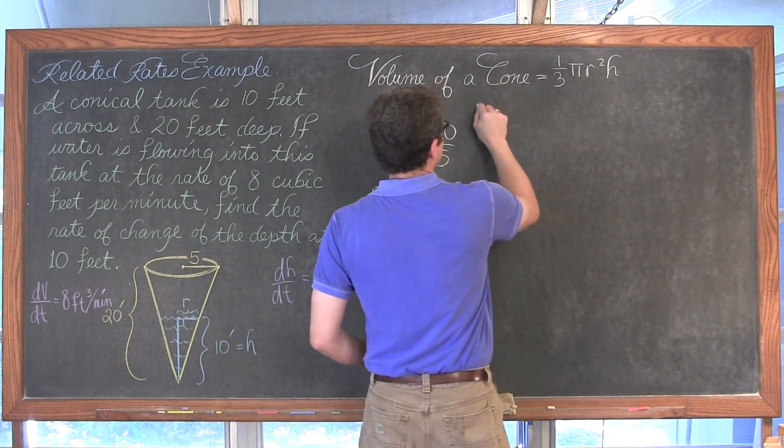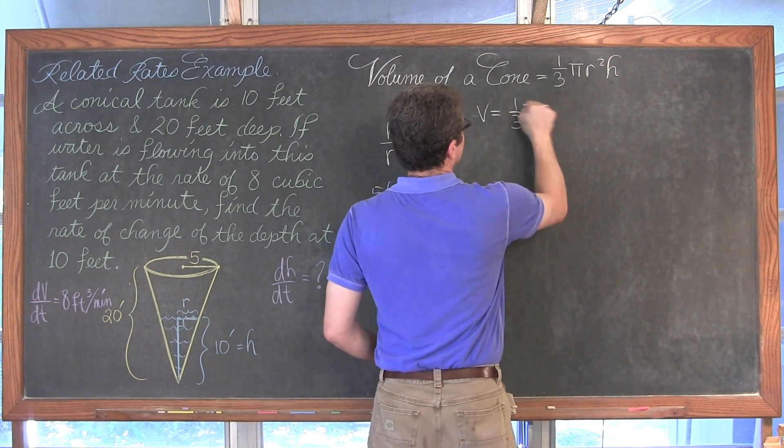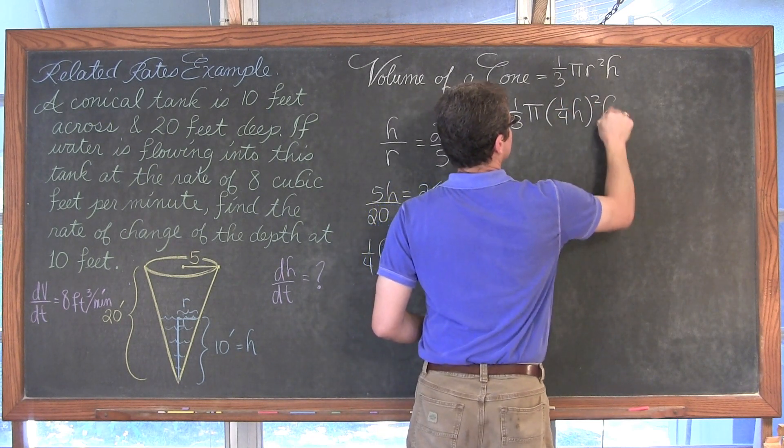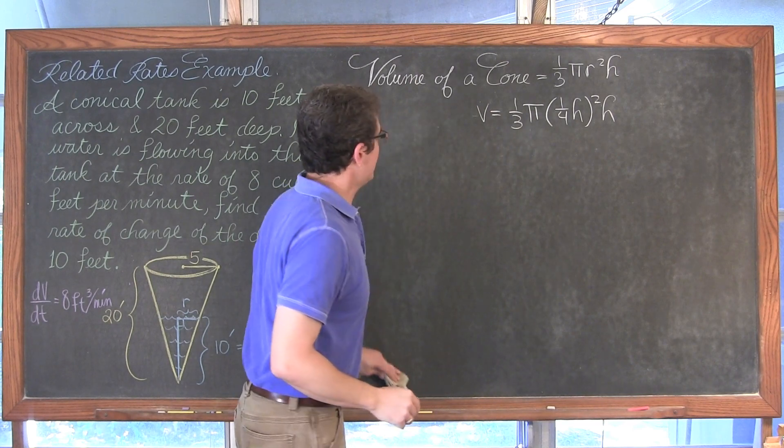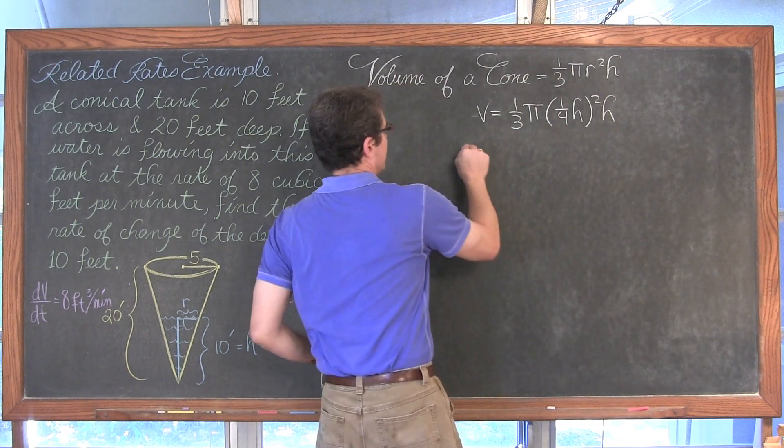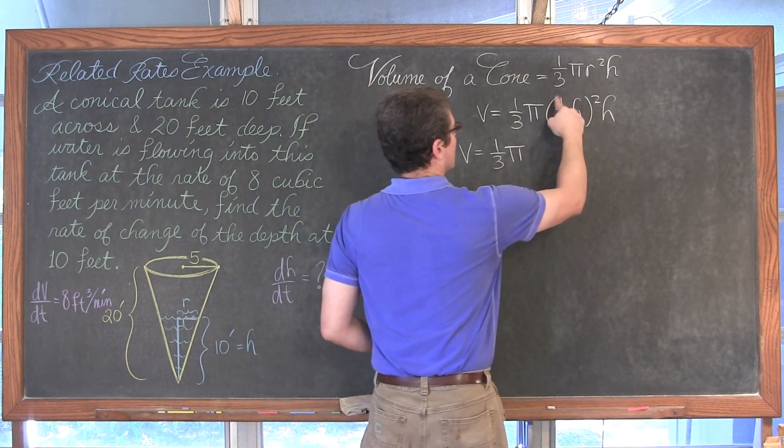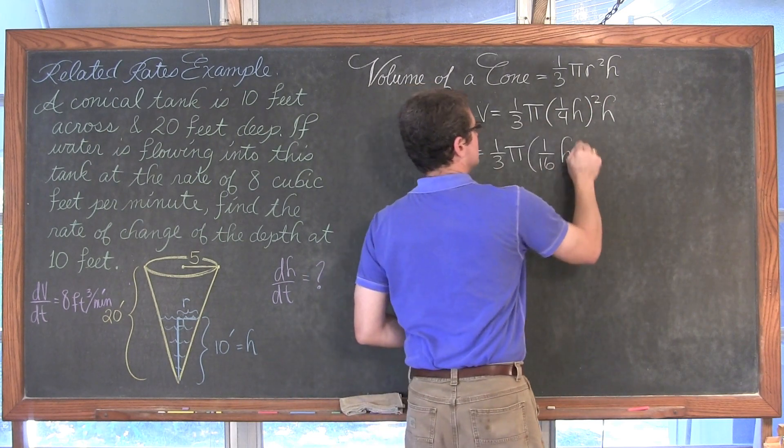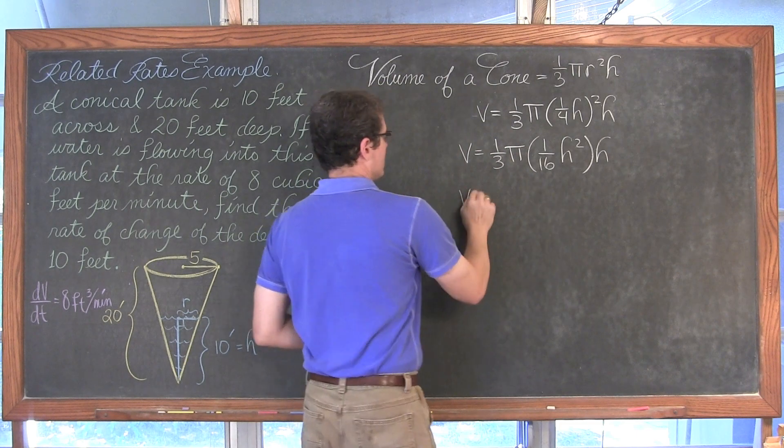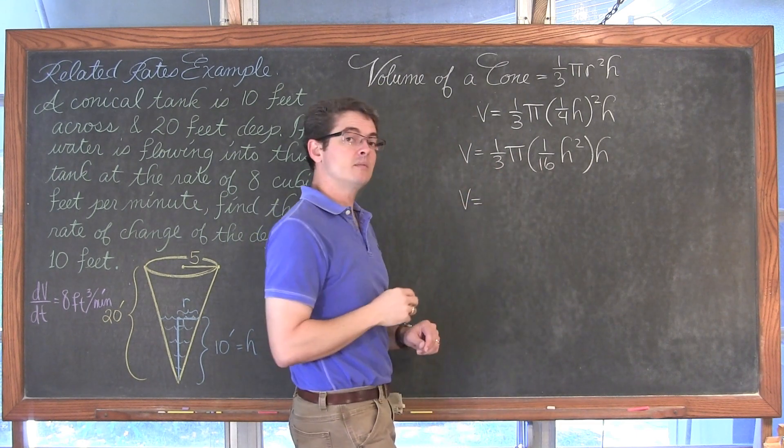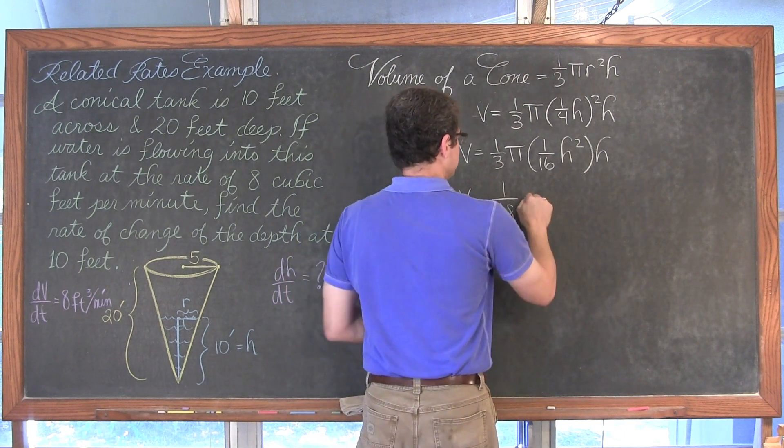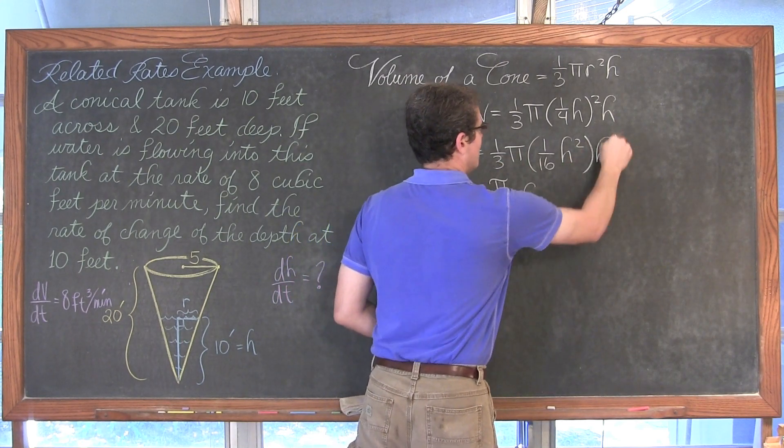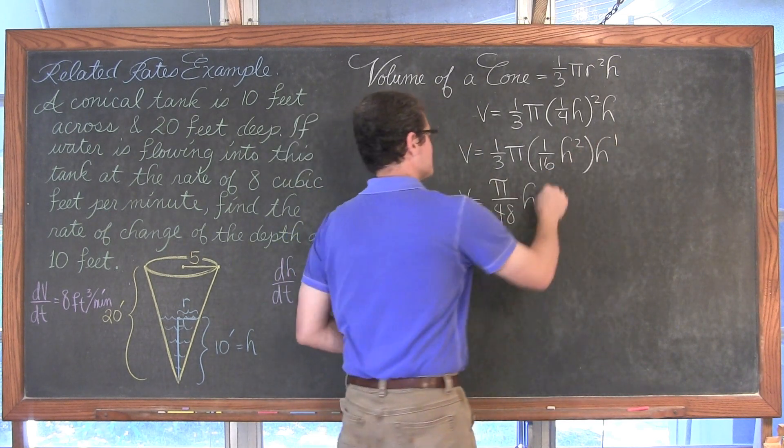Well now I can come over here and say well now my volume is equal to 1 third pi times r which is going to be equal to 1 fourth the height squared times h. So now I have volume in terms of just h. Let's just clean this up a little bit. We have volume is equal to 1 third pi, 1 fourth squared is 1 sixteenth, and then we have h squared times h. Cleaning this up a little bit more we have volume is equal to 1 over 48 pi h cubed.